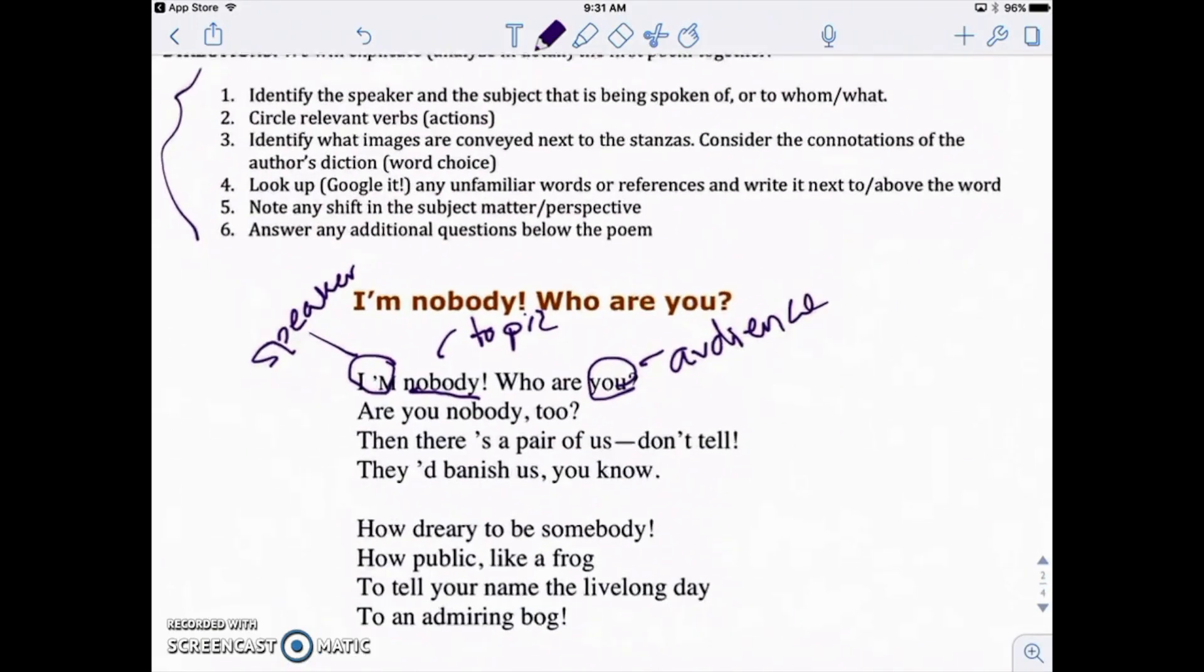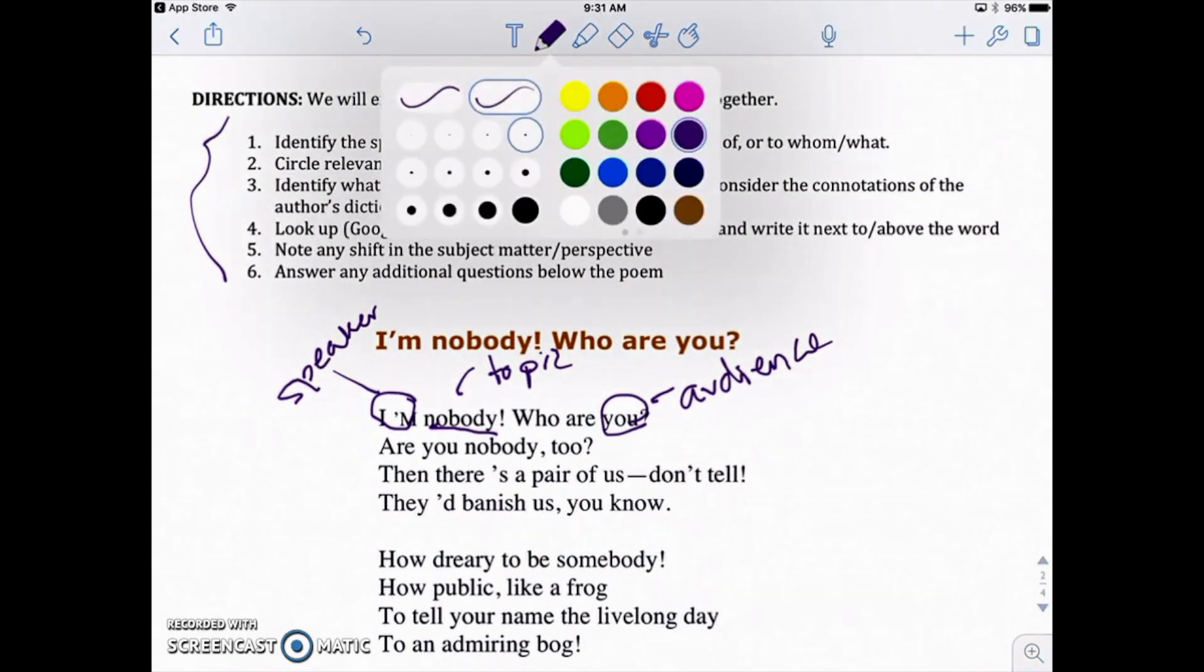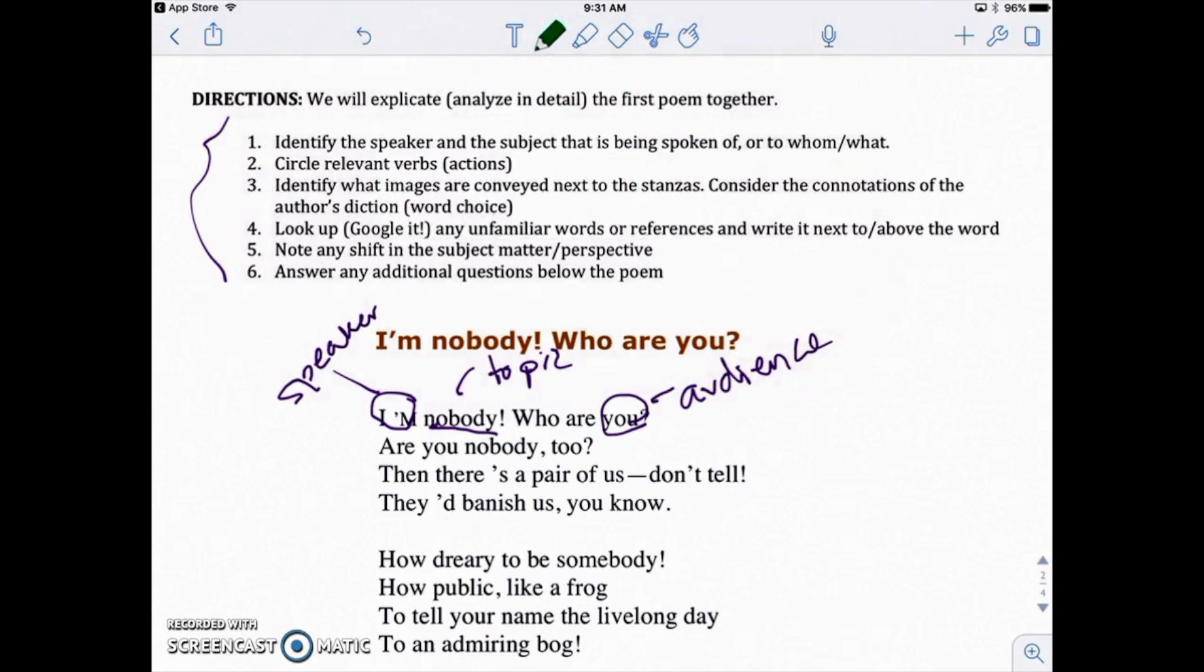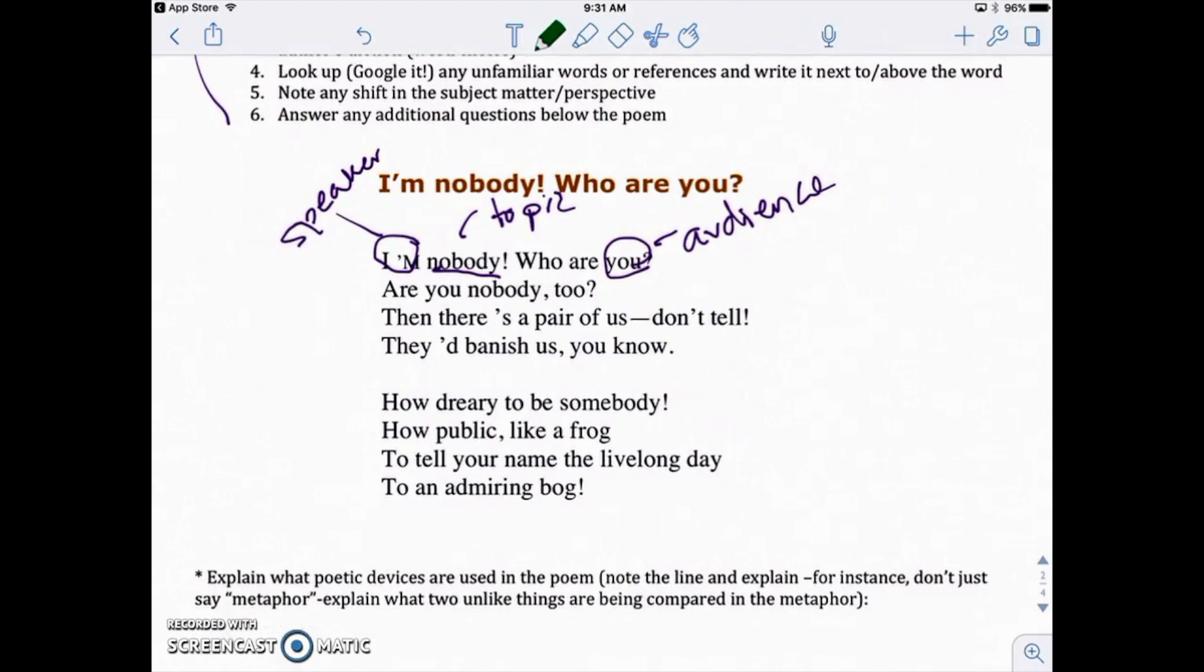Okay. If we go back to the top up here where it says the six steps, now we're going to circle relevant verbs or actions. So we're going to be looking for verbs that are powerful. Okay. Powerful verbs. So let's go ahead and read this again. I am nobody. Who are you? Okay. Technically our verbs here are am right there and are, who are you? Are you nobody too? Again, it's all about the verb to be, right? Is who are you is our big verb here?